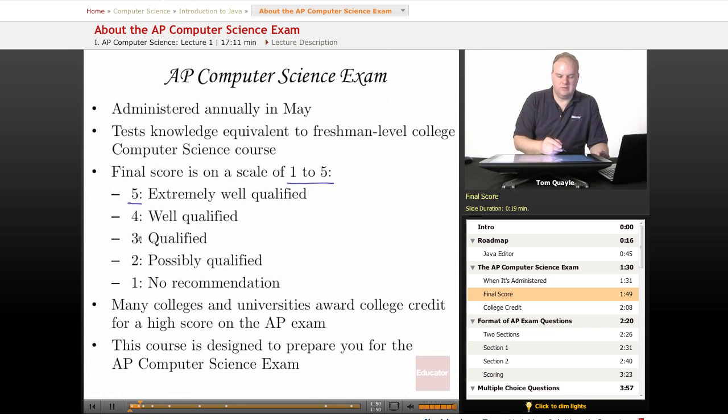Five indicates extremely well qualified and one indicates no recommendation. Many colleges and universities award college credit for a high score on the AP exam. Generally, you need to get either a five or four to get college credit, though some colleges may give credit for a three as well. This course is designed to prepare you for the AP Computer Science exam.